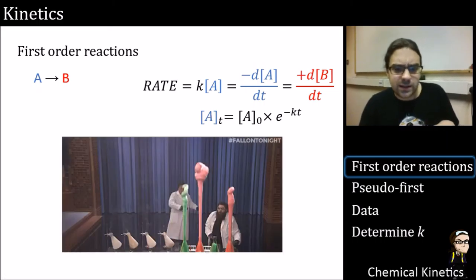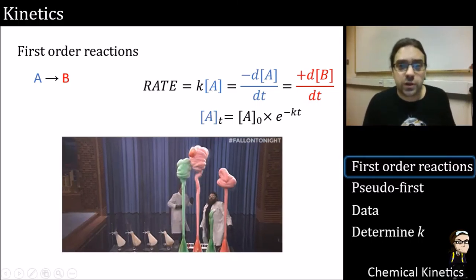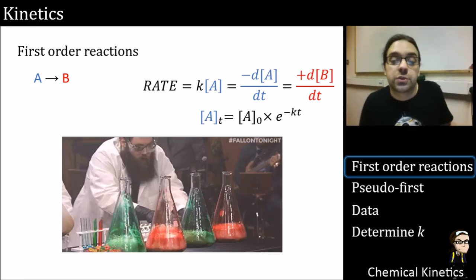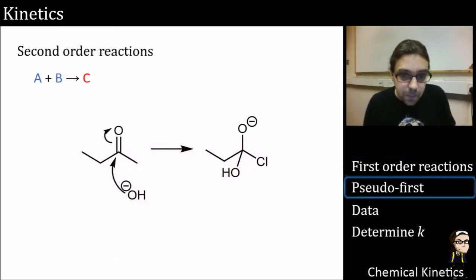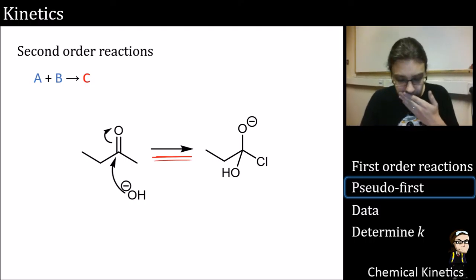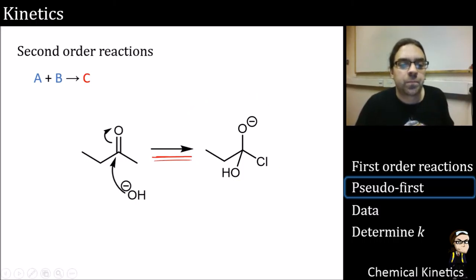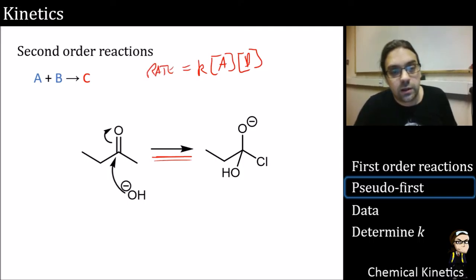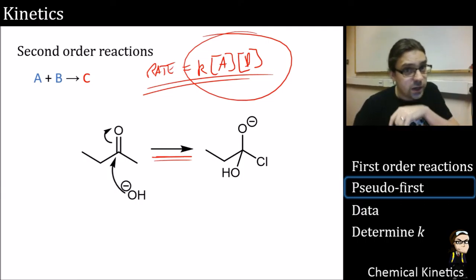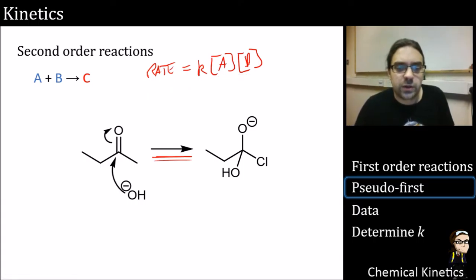An obvious first order reaction is something like peroxide decomposing — elephant's toothpaste is pretty much a first order reaction, peroxide breaking down, in this case catalytically, but according to just the concentration. A second order reaction, like a nucleophilic addition, is an elementary step where the rate is k times [A] times [B]. We are only interested in elementary steps; if we've tracked an entire reaction we have to determine it experimentally.